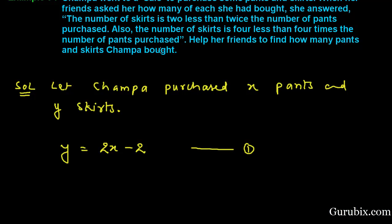Same as in the second condition, the number of skirts, this means Y is equals to 4 less than 4 times of the number of pants purchased. This means 4X minus 4.